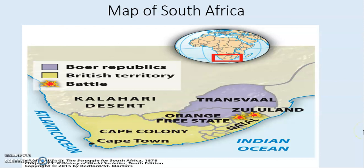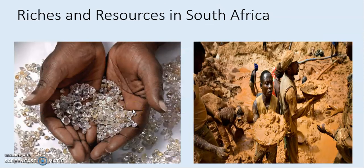This right here is a map of South Africa during the time it comes under colonization. We begin to see the Boers, the British, and of course the battles of the Anglo-Boer War. You had Transvaal, led by Paul Kruger, Zululand, the Orange Free State, Cape Colony, Natal, and the Kalahari Desert.